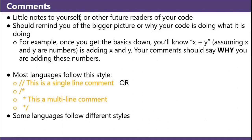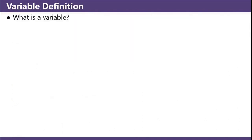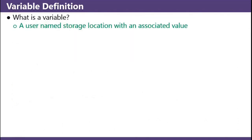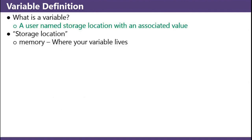Some languages follow different styles. What is a variable? A named storage location with an associated value. What's a storage location? Memory — which almost everyone knows what memory is — is where your variable lives. Thinking inside the box: a variable is conceptually a box.